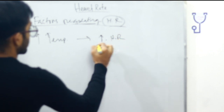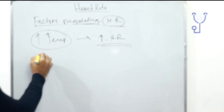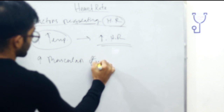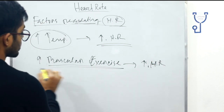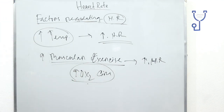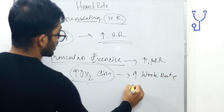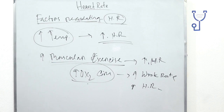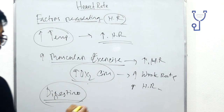Temperature directly regulates the heart rate. Increased temperature causes increased heart rate through the process of thermoregulation. Muscular exercise also increases heart rate because the body needs more oxygenated blood circulation, which increases the work rate of the heart and ultimately increases heart rate.